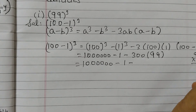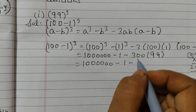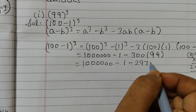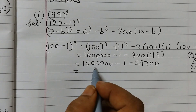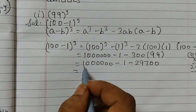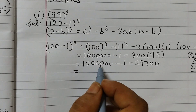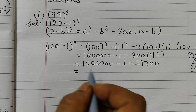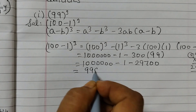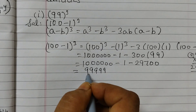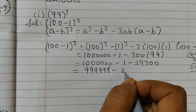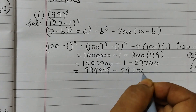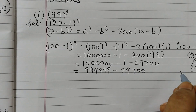Now we calculate 300 × 99. 99 × 3 = 297, so 300 × 99 = 29,700. So the expression becomes 1,000,000 minus 1 minus 29,700.